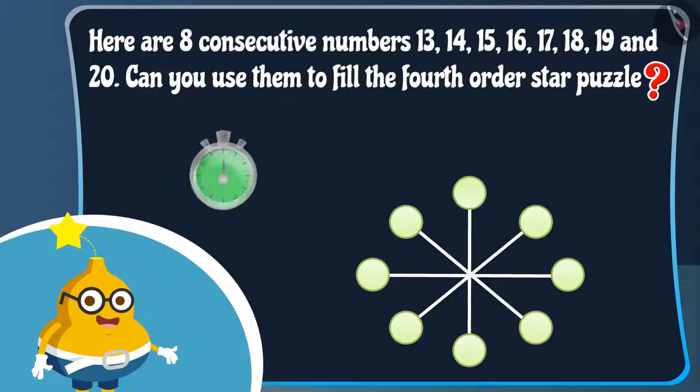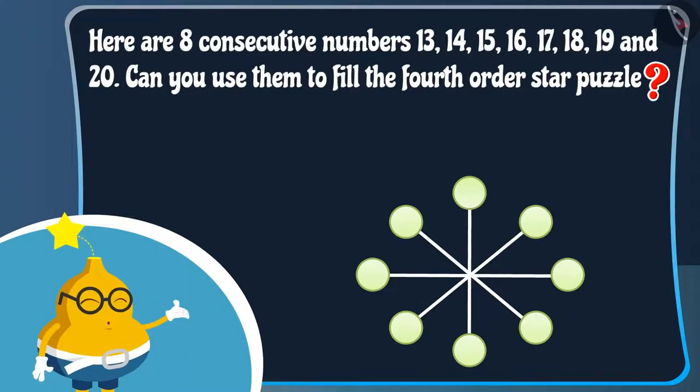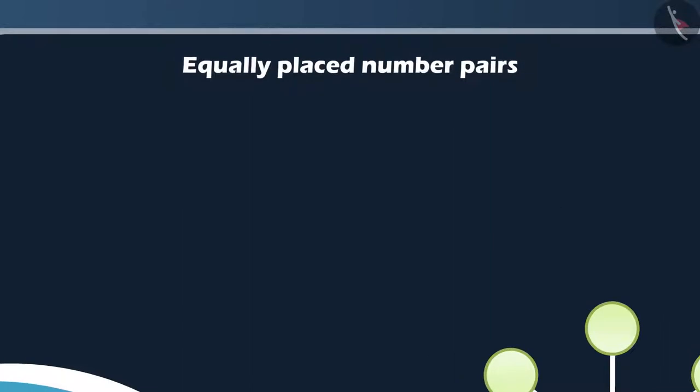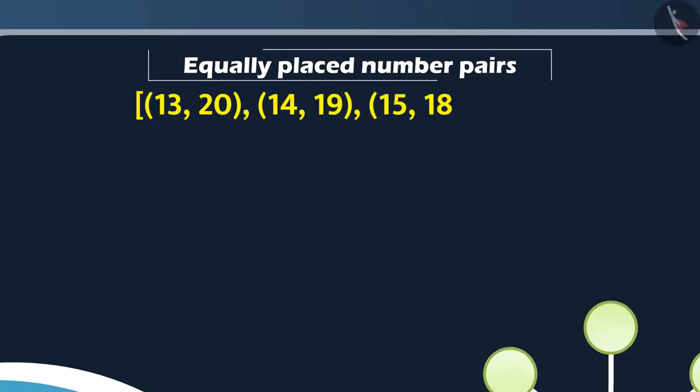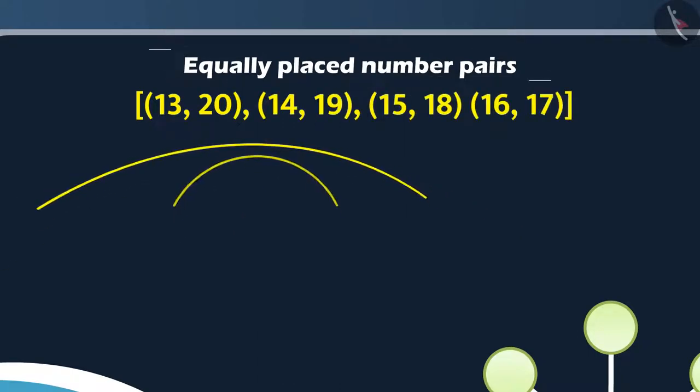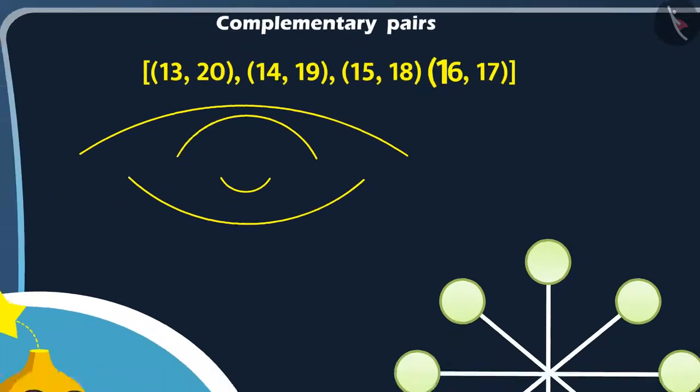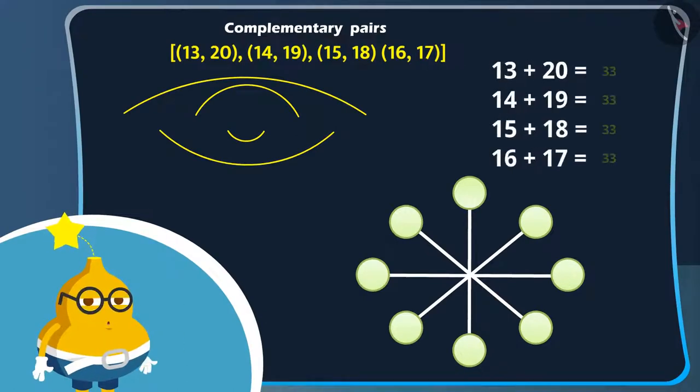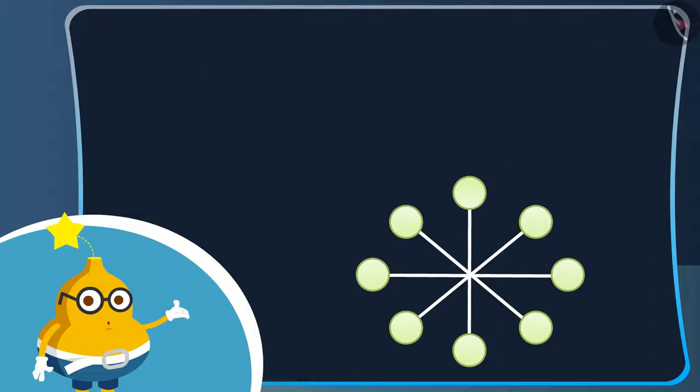Come, now let's see how Fruity solves the puzzle. Fruity says, for this, we have to take equally placed number pairs. Here, these are the equally placed number pairs or complementary pairs and see their sums are equal. So, by using these numbers, we can fill the star like this.